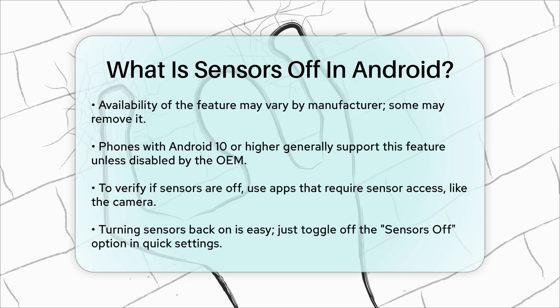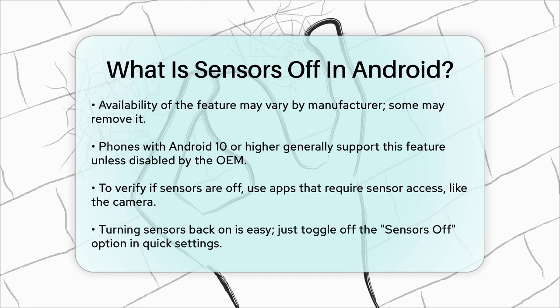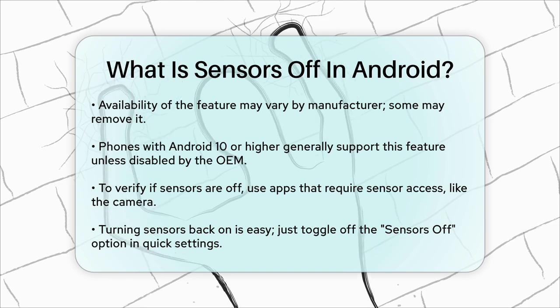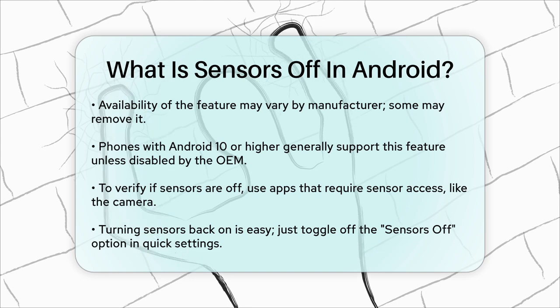When you're ready to turn the sensors back on, simply go back to the Quick Settings panel and toggle off the Sensors Off option. This will restore all your phone's sensors to their normal functioning state.